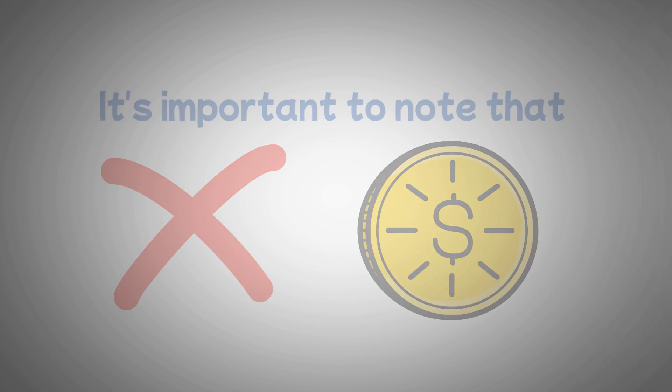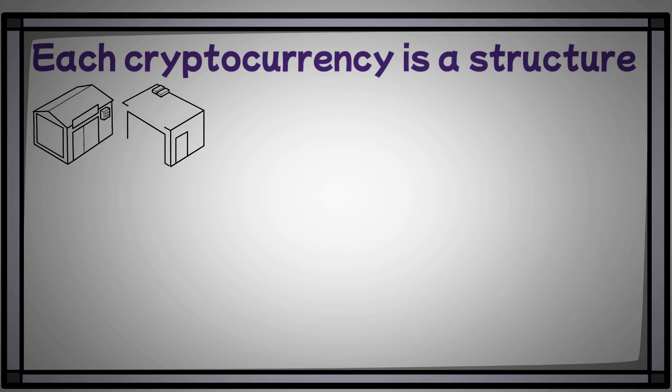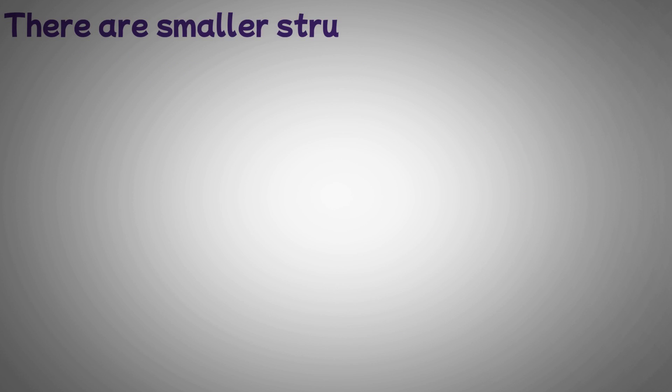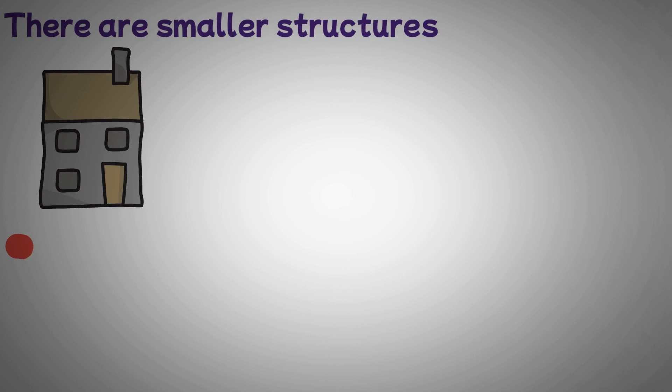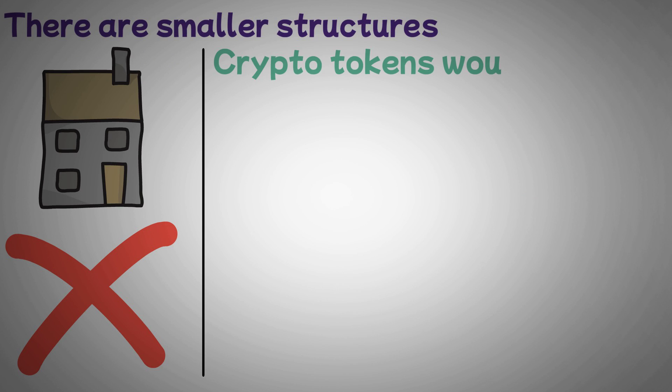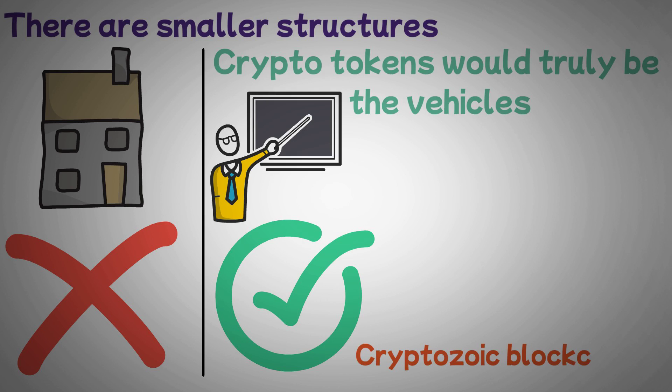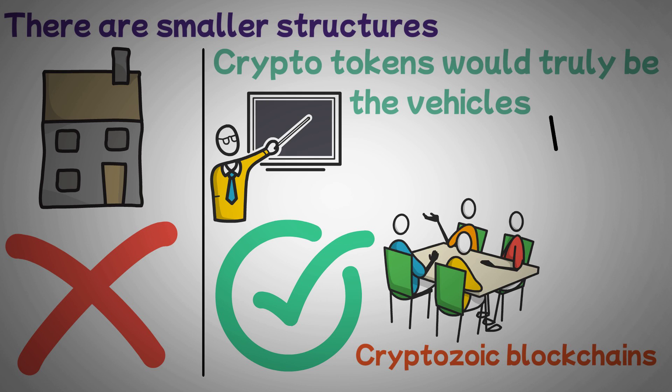But consider it in this way. Imagine that each cryptocurrency is a structure. Building sizes range from larger to smaller and so forth. Additionally, all of them have various features and serve various purposes, right? For instance, some structures feature huge garages where many cars can be kept. Then there are smaller structures, such as private homes, which would not often have a dedicated space for a car. Let's pretend that in this scenario, crypto tokens would truly be the vehicles that could be kept in the previously mentioned virtual city structures or not. Similar to this, some crypto blockchains permit token creation by developers, while others do not.